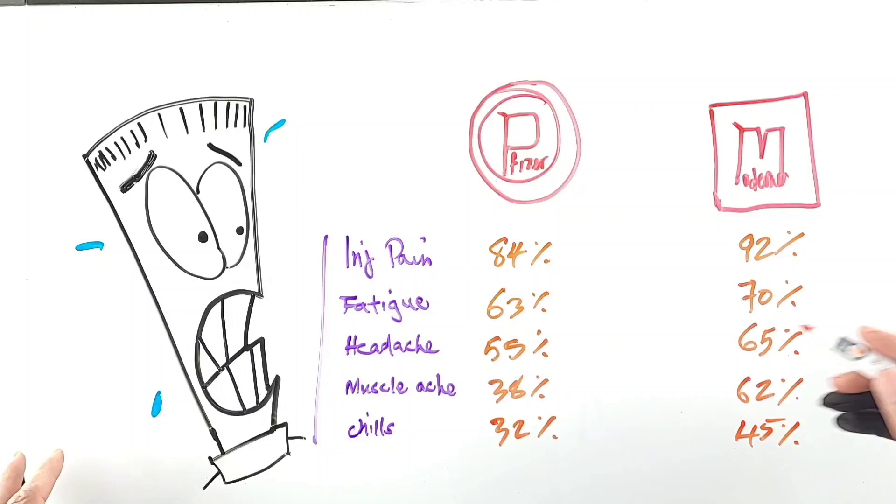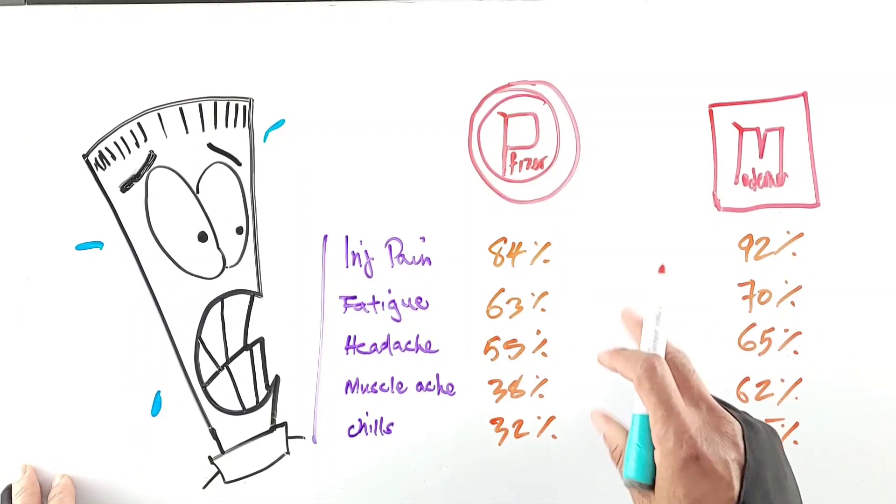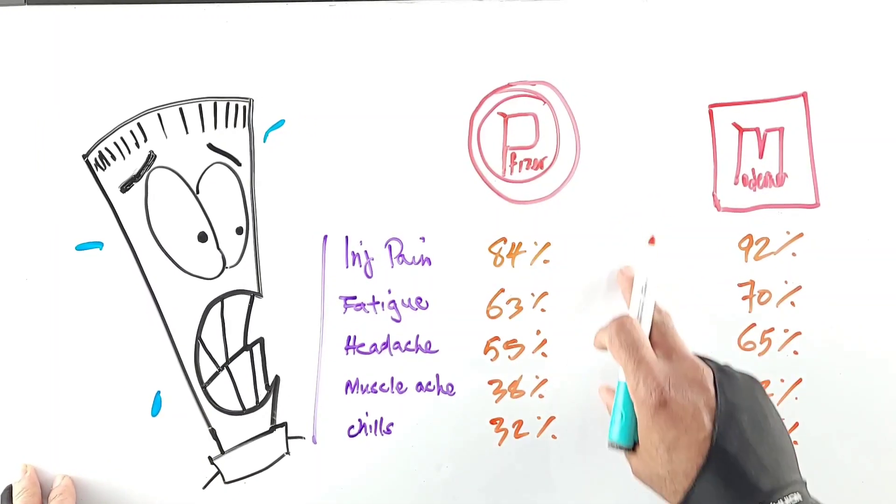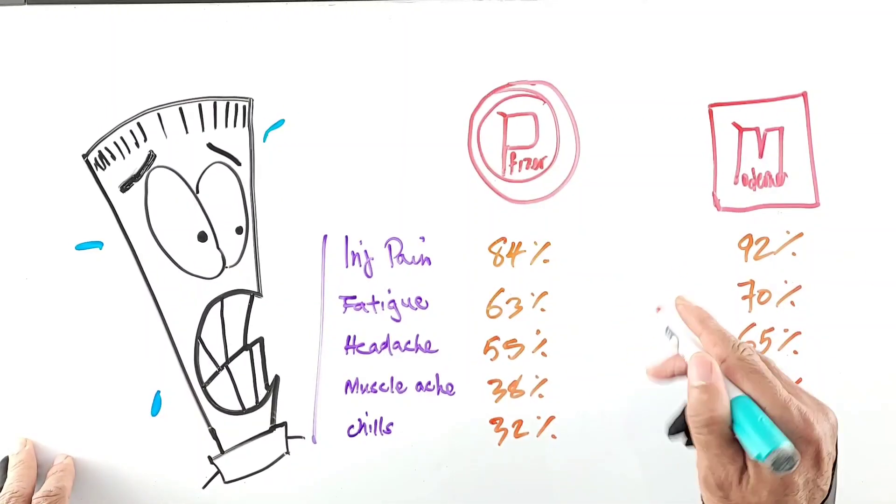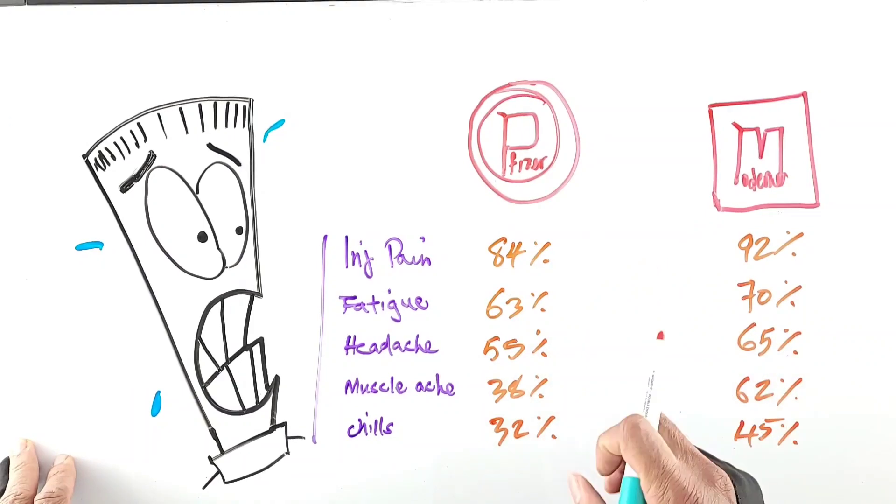the head-to-head trial suggests that the Pfizer comes out king and Moderna not so much in terms of side effects. There was more injection pain with Moderna, more fatigue, more headache, more muscle aches and more chills.